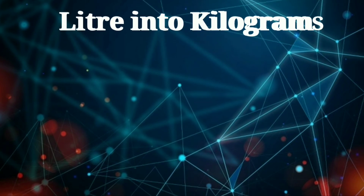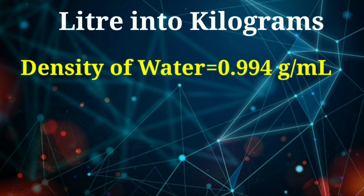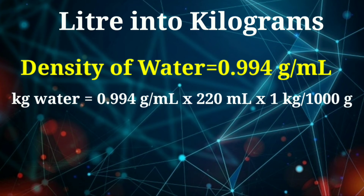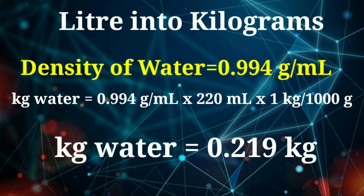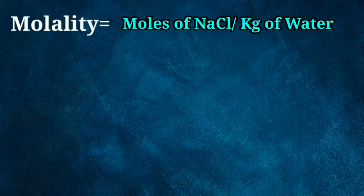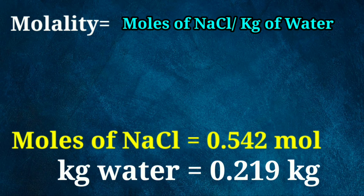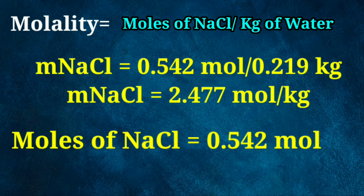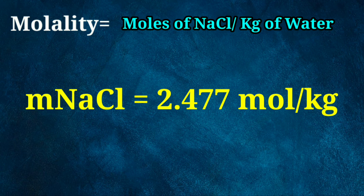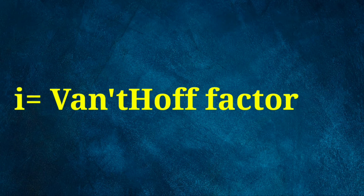For the first part, this is density. Density is 0.994 grams per mL. To identify how much water, we multiply by 1 kg per 1000 grams. We will multiply to get 0.219 kg, giving us a molality of approximately 2.477 mol per kg.